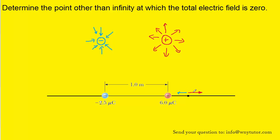This looks initially promising because we have one field pointing right and the other pointing left. However, this point is located much closer to the positive charge than to the negative charge. Also, the positive charge has a much greater magnitude of charge compared to the negative charge. That means the electric field produced by the positive charge will always be larger in magnitude — the negative charge only has 2.5 microcoulombs and is much farther away — so its field will necessarily always be smaller, and they will never cancel.